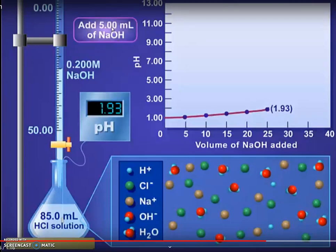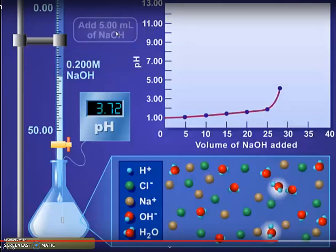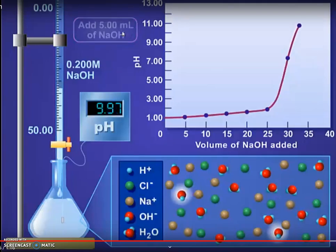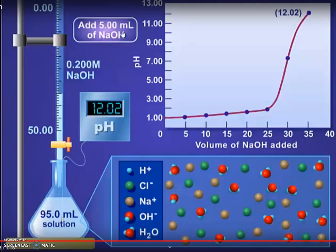All that's present is salt and water. But as one drop of NaOH is added past the endpoint, we'll see a sharp rise, as you see here in the graph, to approximately pH 12.